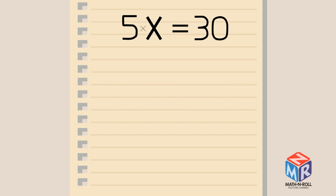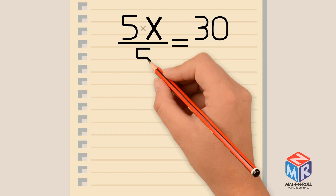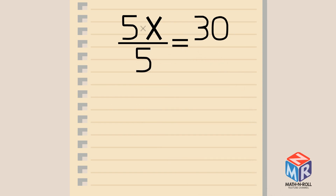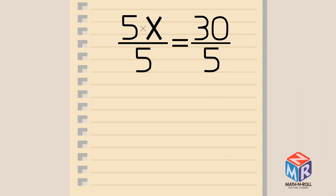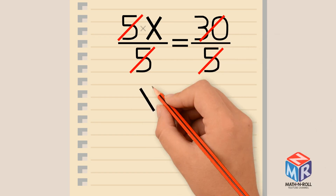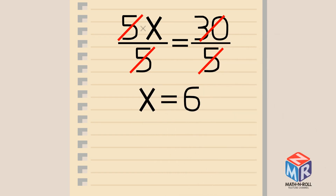We could write this division in fraction form. So to divide this side by 5, we just write the fraction line under it and put a 5 below the line. We need to do the same thing to the other side to keep the equation balanced. Now both sides are being divided by 5. Simplify by cancelling out. We have solved the equation — x equals 6.